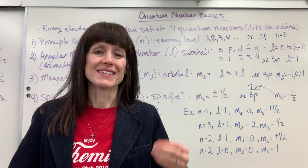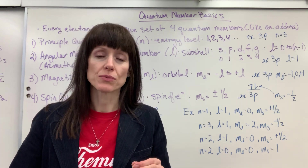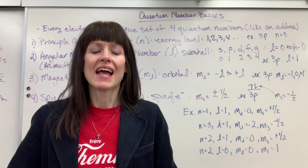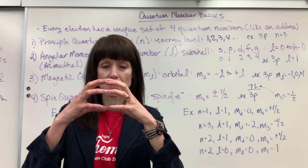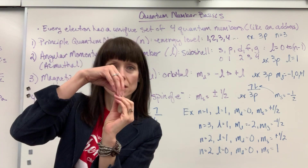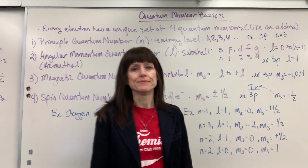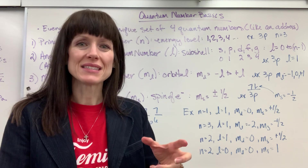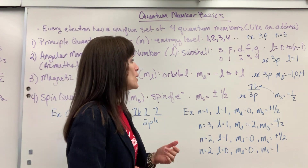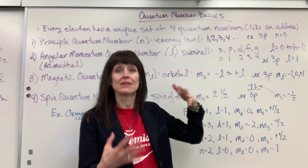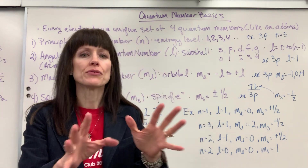Remember, the subshell indicates a shape. If you need to, go to my playlist on atomic structure and look at the subshells. The sphere is the S subshell, three dumbbells is the P subshell, five dumbbells is D, seven dumbbells is F. You'll see how those shapes come into play with orbital notation. Don't let that confuse you — this will all come together.